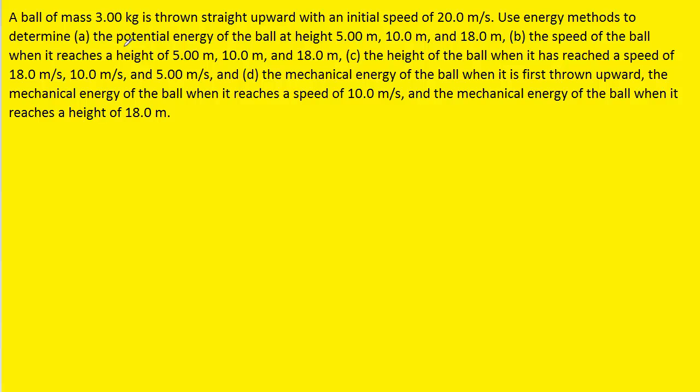In part A, we are asked to calculate the potential energy of the ball at various heights. We know that the potential energy, or more specifically gravitational potential energy, is equal to the mass of the ball times g times the height to which the ball has risen.